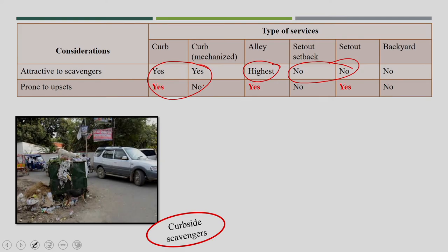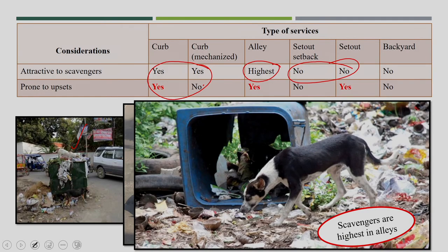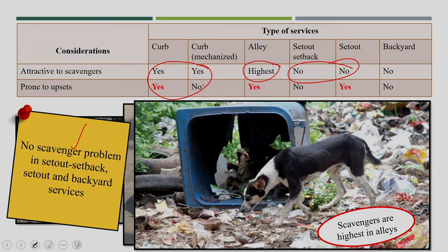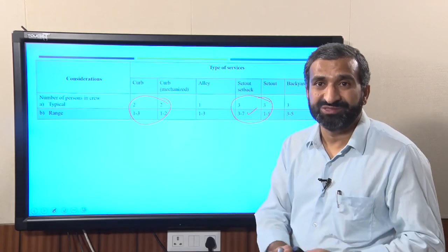No scavenger problems exist in set-out set-back or backyard service, which is why it is good to have house-to-house collection or set-out set-back service. Another important consideration is the number of crew members required — curb service requires fewer crew members compared to set-out set-back service. Set-out set-back service requires a large number of crew members because the crew member has to visit each house and each household.